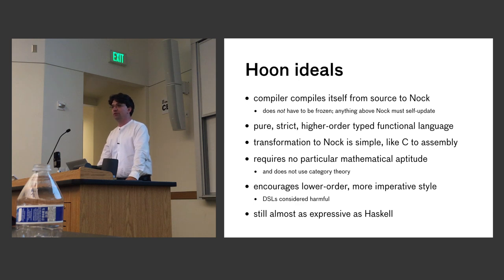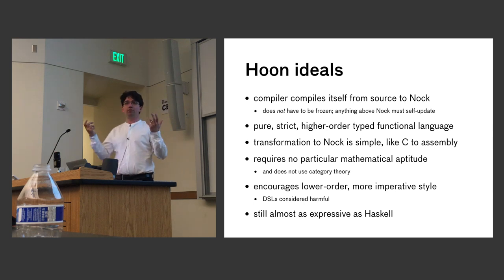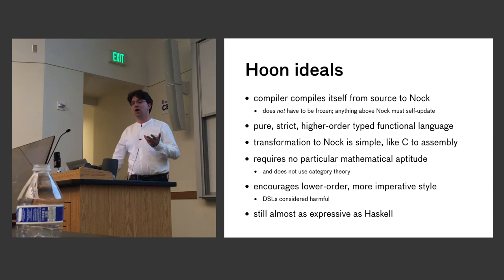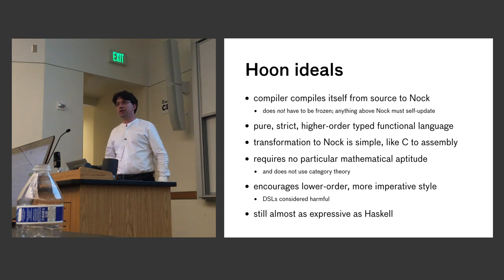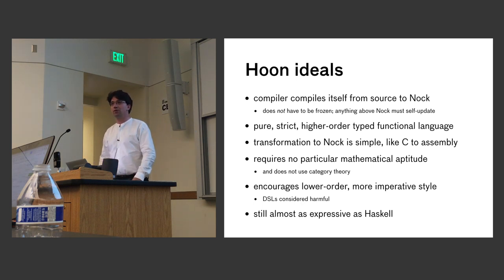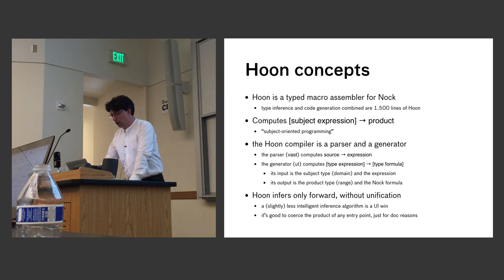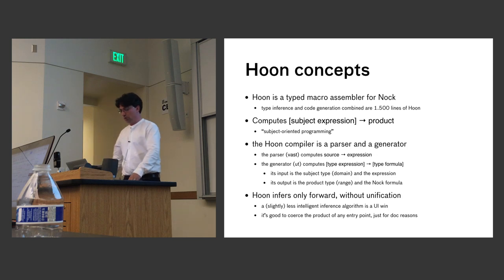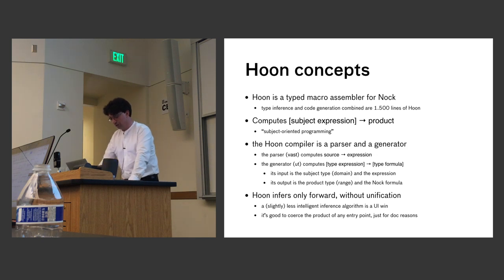There's also a DSL pattern in advanced functional languages where you're so meta that every file is written in its own language — that's a serious downside of functional programming. Hoon is still basically almost as expressive as Haskell. It has the equivalent of type classes and genericity. The back end of Hoon is extremely simple — type inference and code generation together are about 1,500 lines of code. Where Nock does subject and formula to product, Hoon has actual user-level expressions.